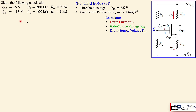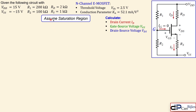We want to calculate the drain current id, the gate-to-source voltage vgs, and the drain-to-source voltage vds. As noted in the previous example, id and is are equal to each other because the MOSFET is a symmetric device, and the gate current is zero.